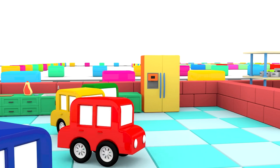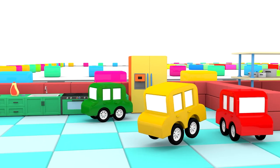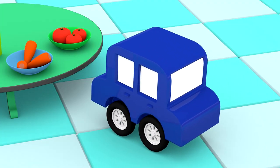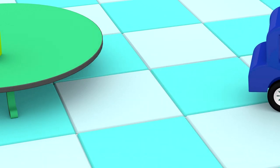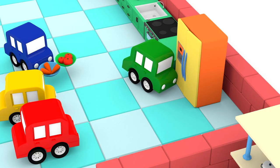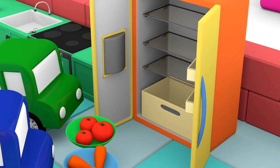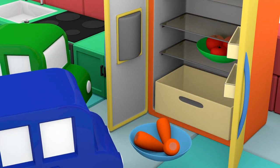Little cars put the groceries into the fridge. The blue car picks up the carrots and tomatoes. He places the veggies into the fridge.